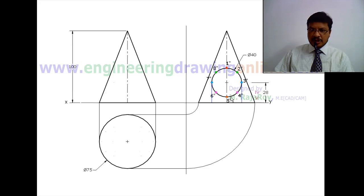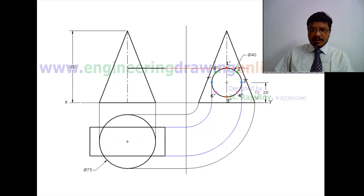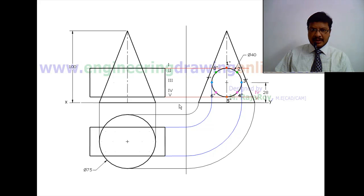After assuming the two solids are cut by five different cutting planes, it is time to project the top view and front view of the horizontal cylinder. Draw the top view and front view of the horizontal cylinder, and mark the assumed five cutting planes.